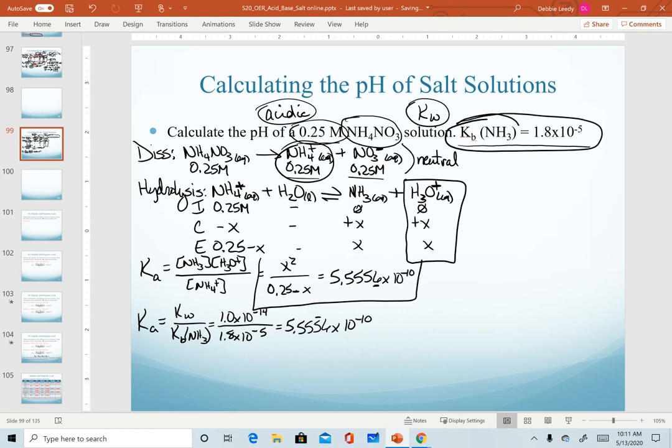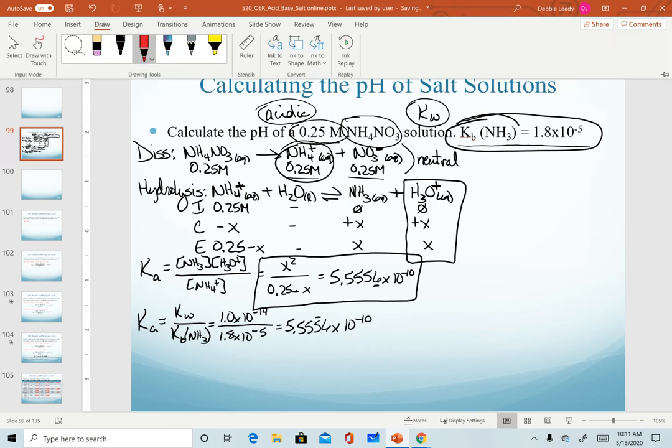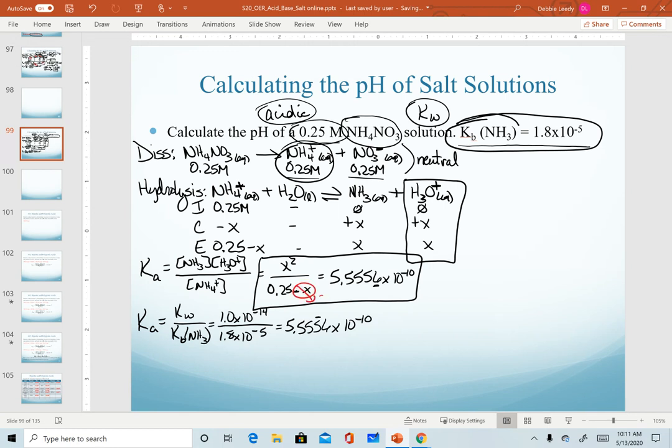So now this is the math equation we are solving for. We have an extremely small K value, so we can definitely assume that this denominator x is going to go to zero. In fact, that K is so small that we don't even need to check our assumption.